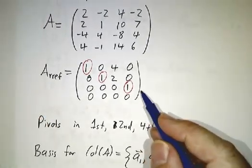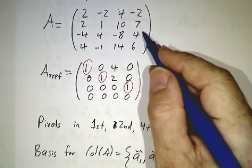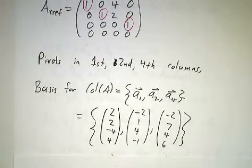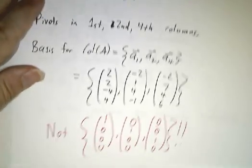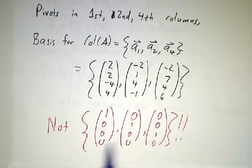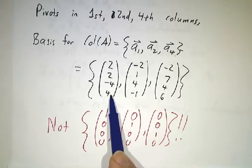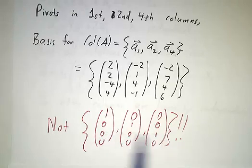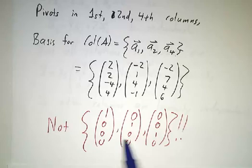But not the first, second, and fourth columns of the reduced row echelon form — the first, second, and fourth columns of the original matrix A. In other words, these three vectors. You can see pretty quickly that this vector is in the column space because it is a column, and it's not a linear combination of those three because they all have zeros at the bottom. You do not want the columns of the reduced row echelon form; you want the columns of the original matrix.